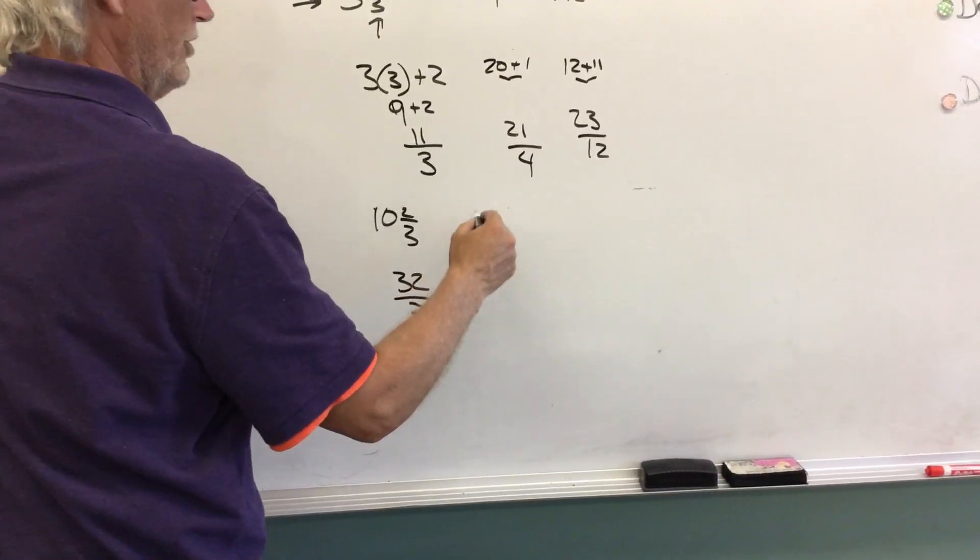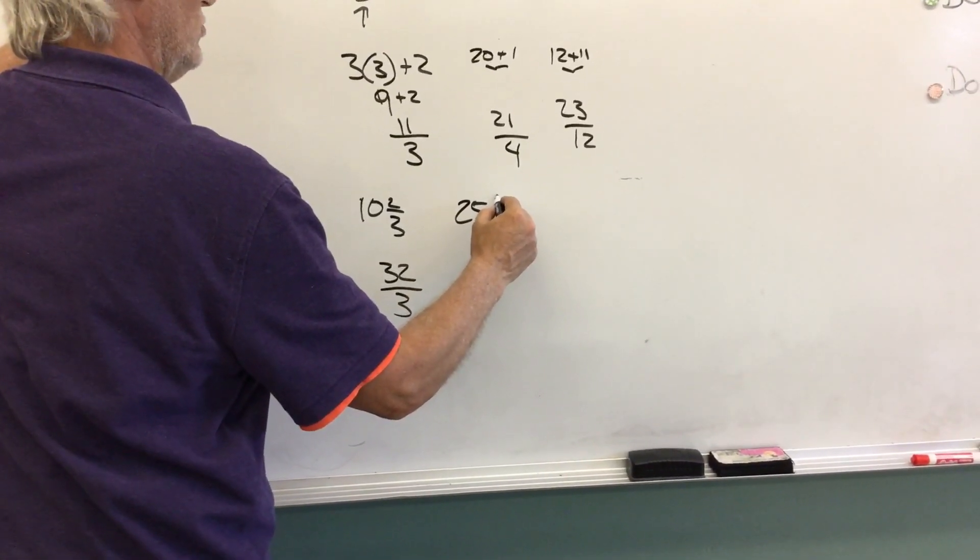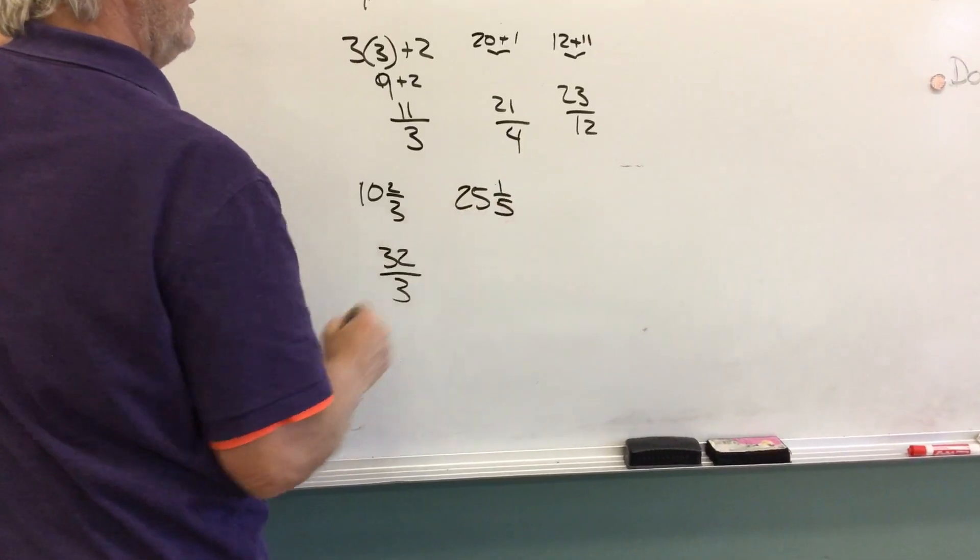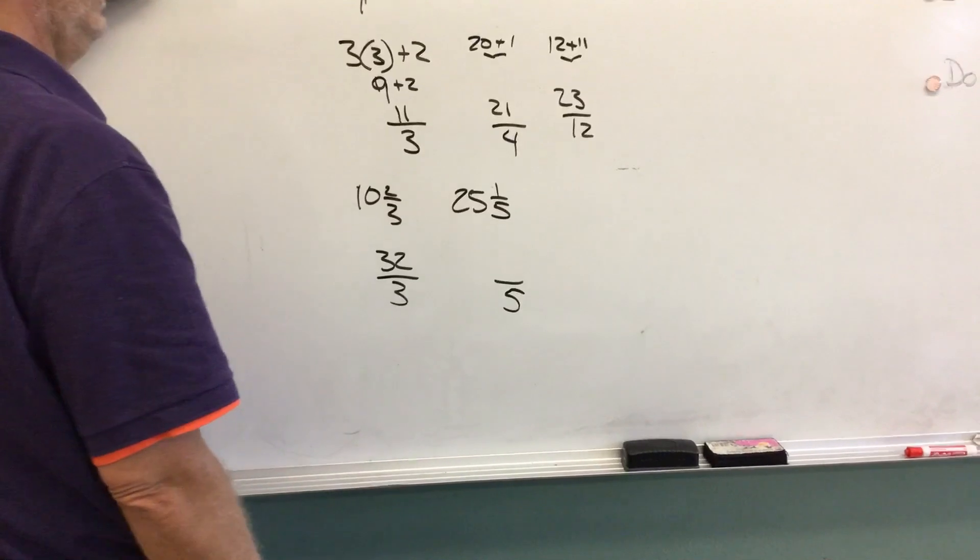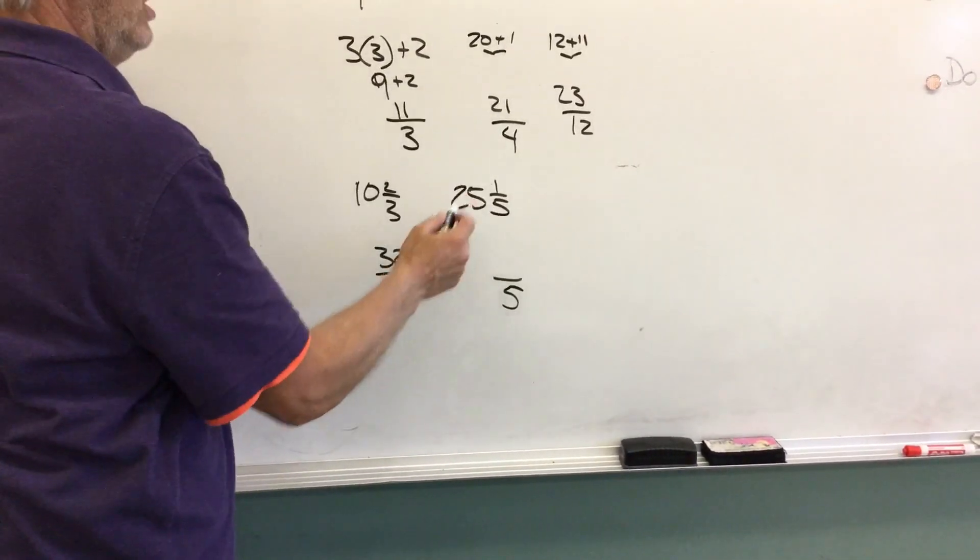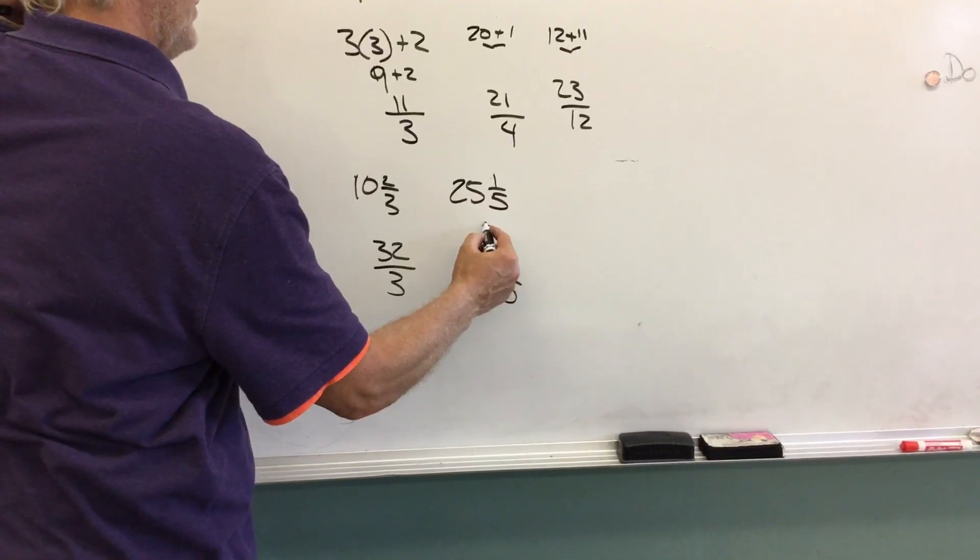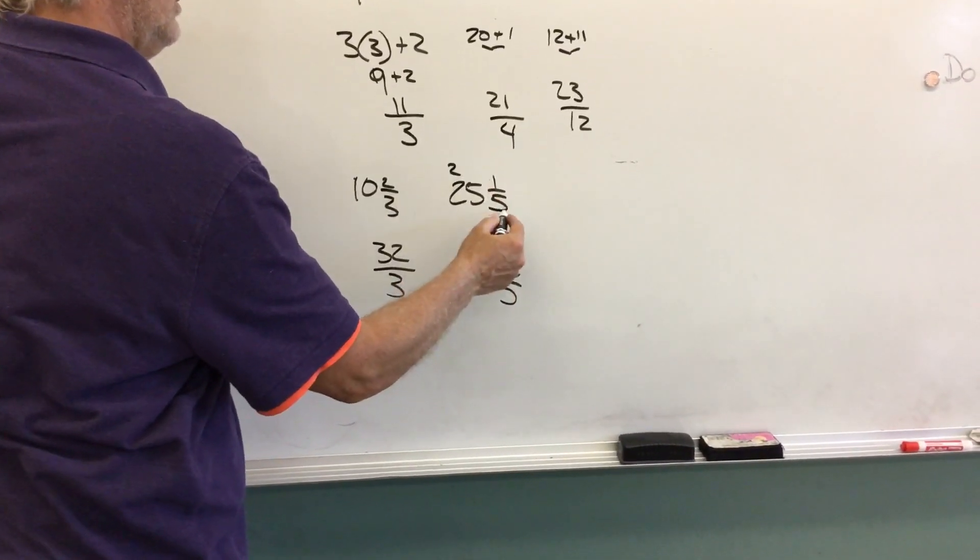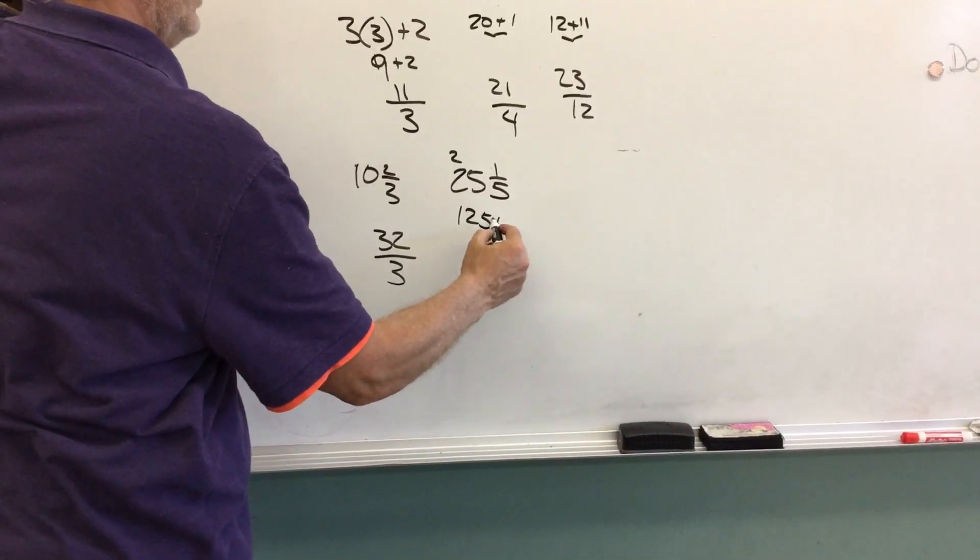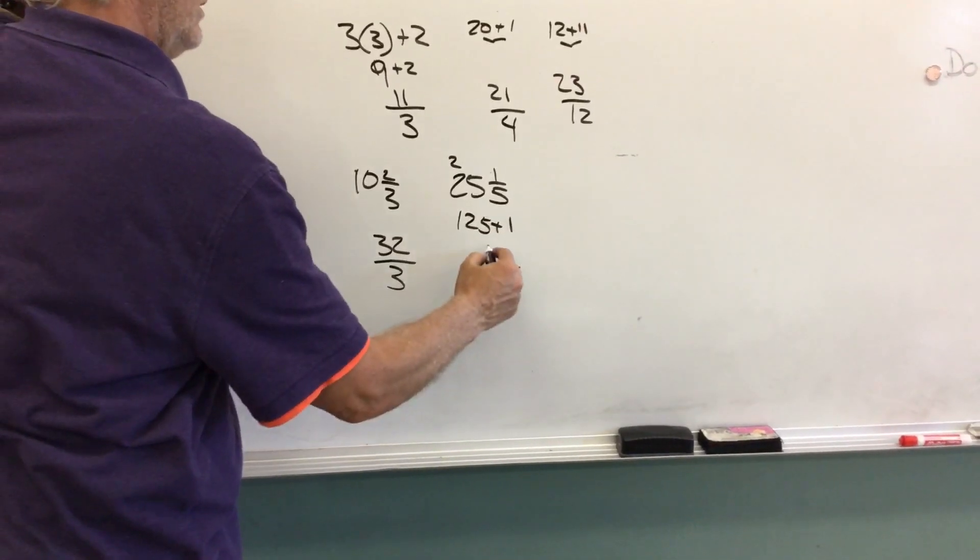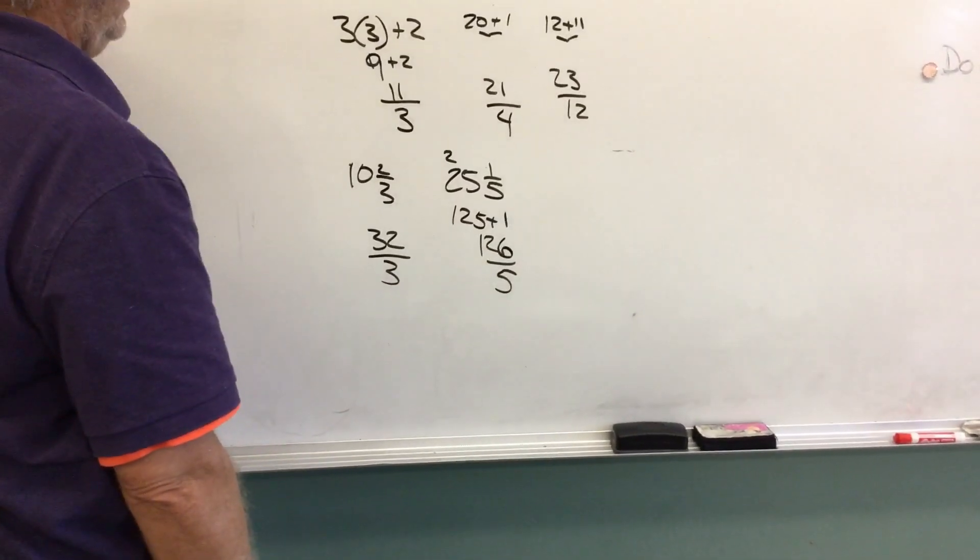Let's try a bigger number. Let's try 25 and 1 fifth. So I know I'm going to have 5 as a denominator. So 5 times 25. Well, let's see, 5 times 5 is 25. So 5 times 2 is 10, plus 2 is 12. 125 plus 1. So my new improper fraction is 126 over 5.